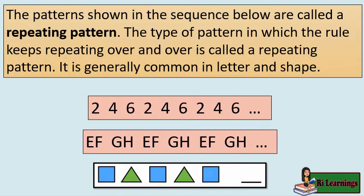The patterns shown in the sequence below are called a repeating pattern. The type of pattern in which the rule keeps repeating over and over is called a repeating pattern. It is generally common in letters and shapes.